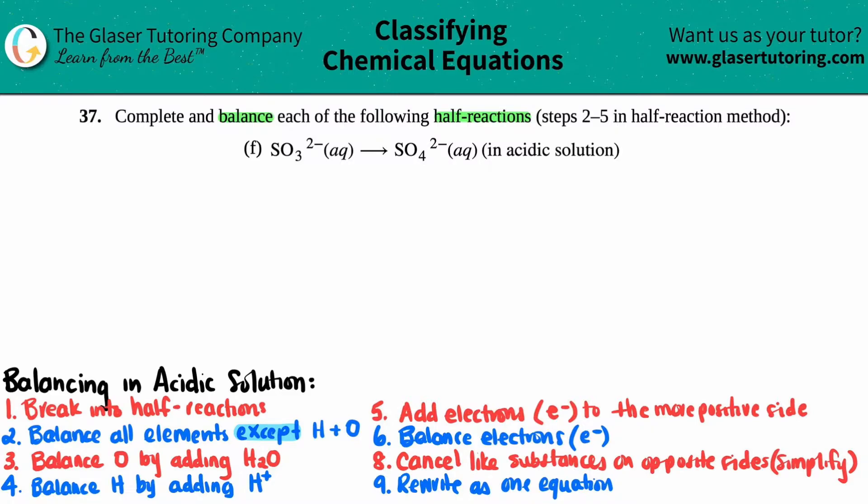So we have to balance and complete the reaction of SO3 two minus aqueous yielding SO4 two minus. So we have two polyatomics here. We have sulfite turning into sulfate. They tell us that this is going to be in an acidic solution.